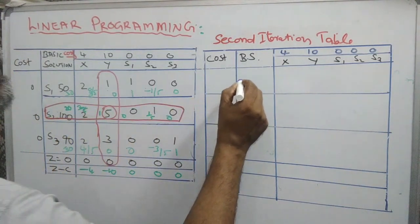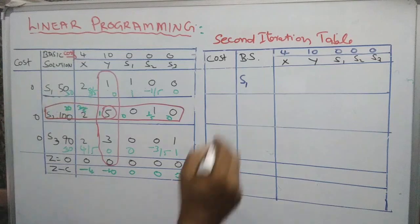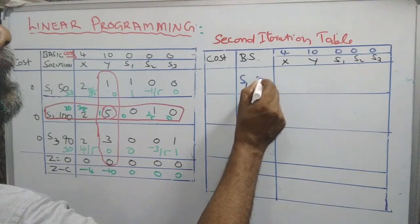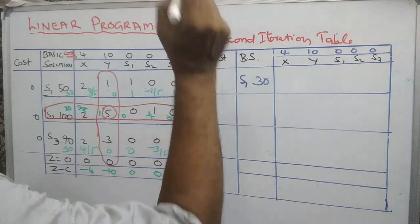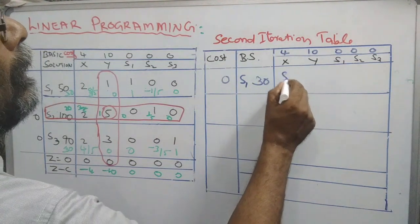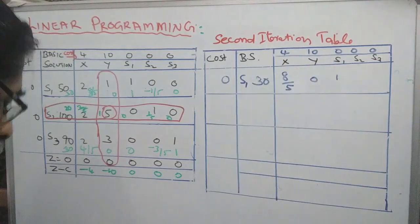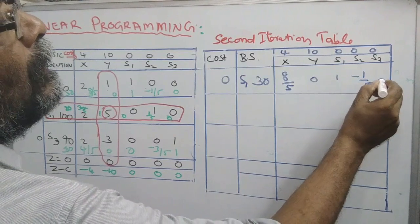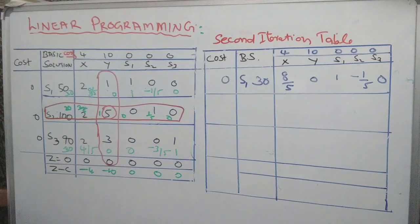The cost of S1 — the variable is S1, no change in cost. In the last table it was 50; now its value is 30 in the second iteration table. The cost of S1 from our objective function is 0. The new elements are 8 by 5, 0, 1, minus 1 by 5, 0. In the Simplex method iteration, in the first table one variable is left out and one variable is included — the variable y is now included.